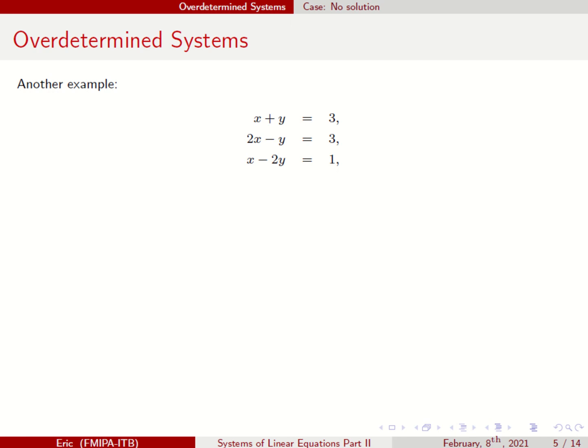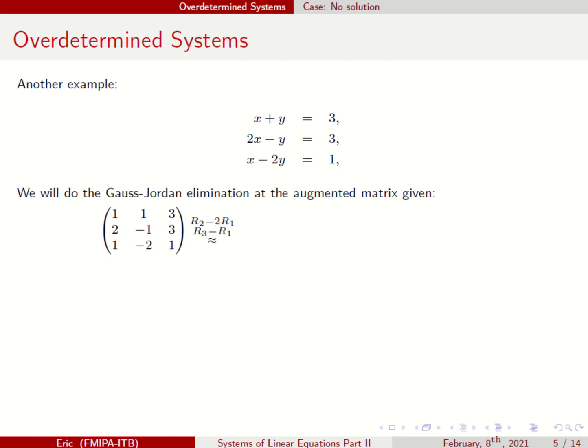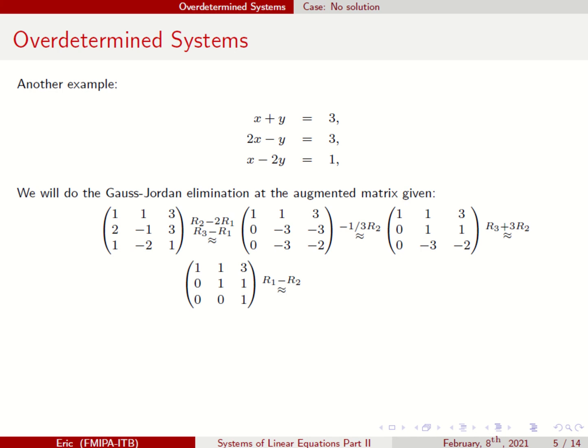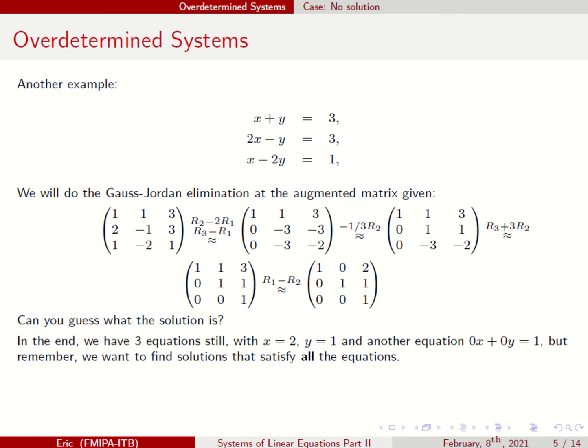Another example: X plus Y equals 3, 2X minus Y equals 3, and X minus 2Y equals 1. Using the same Gauss-Jordan elimination on the augmented matrix, you get this row echelon form. From the row echelon form I can see there is no solution, because you have 0X plus 0Y equals 1 — there are no X and Y that satisfy that equation. So you have no solution here.